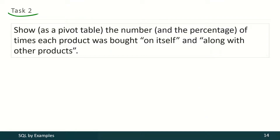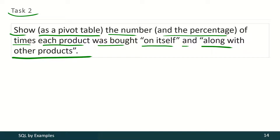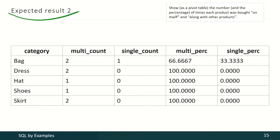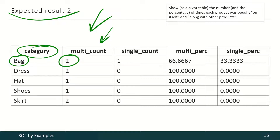In the second task we have to show as a pivot table the number and the percentage of times each product was bought on itself and along with other products. For each category we see that category name, then the number of times products of that category were bought with products of other categories, and the number of times products of that category were bought in single mode, i.e. without any product of any other category.